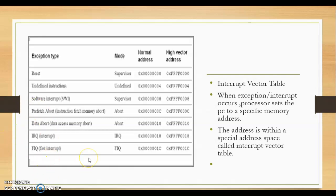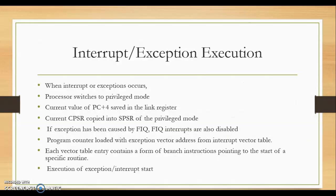Interrupt request is a hardware interrupt. IRQ is low priority and FIQ is high priority and faster, so FIQ is used for fast applications. FIQ and IRQ will only be recognized if they are not masked in the CPSR — the current program status register. CPSR stores the condition of all flags, the current mode, and whether interrupts are masked. If an interrupt is masked (disabled) in CPSR, it will not be recognized.